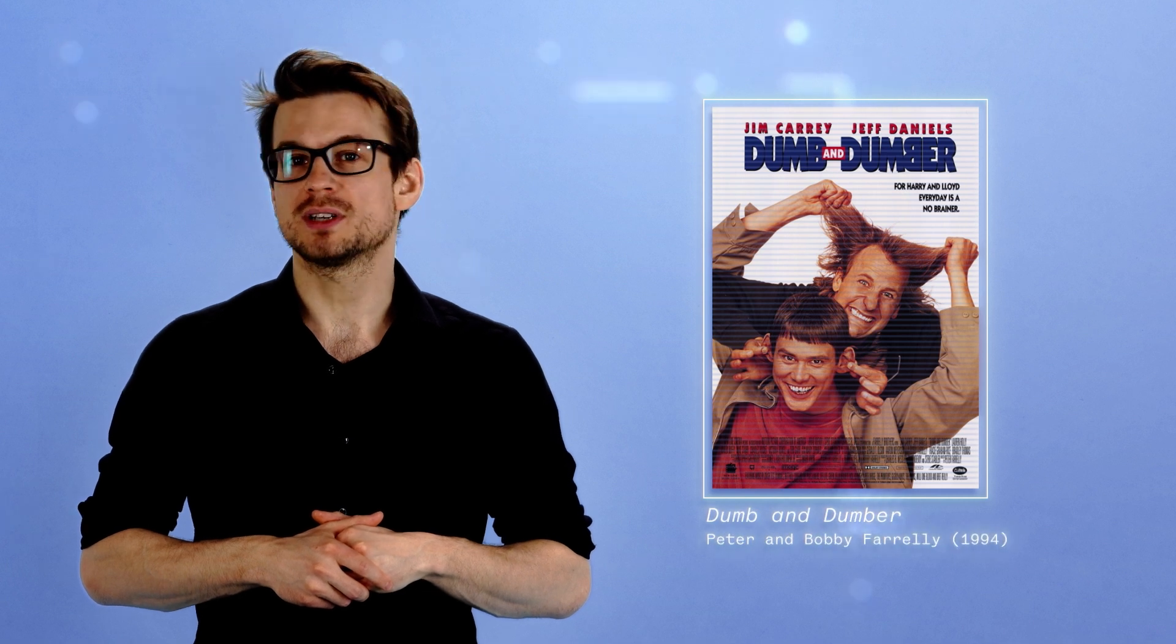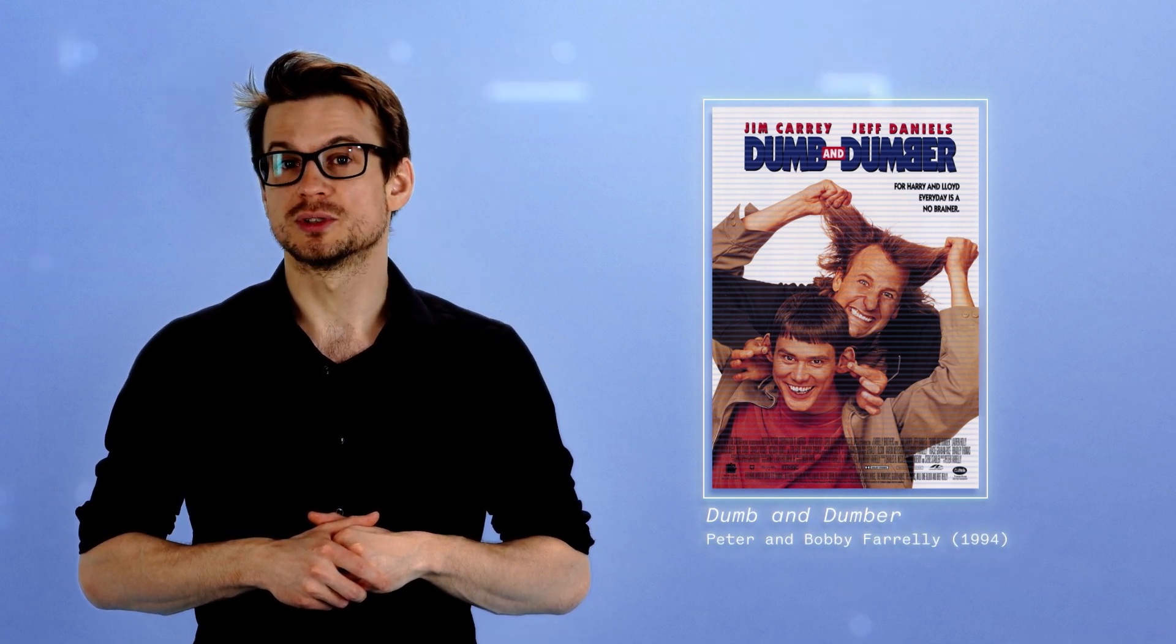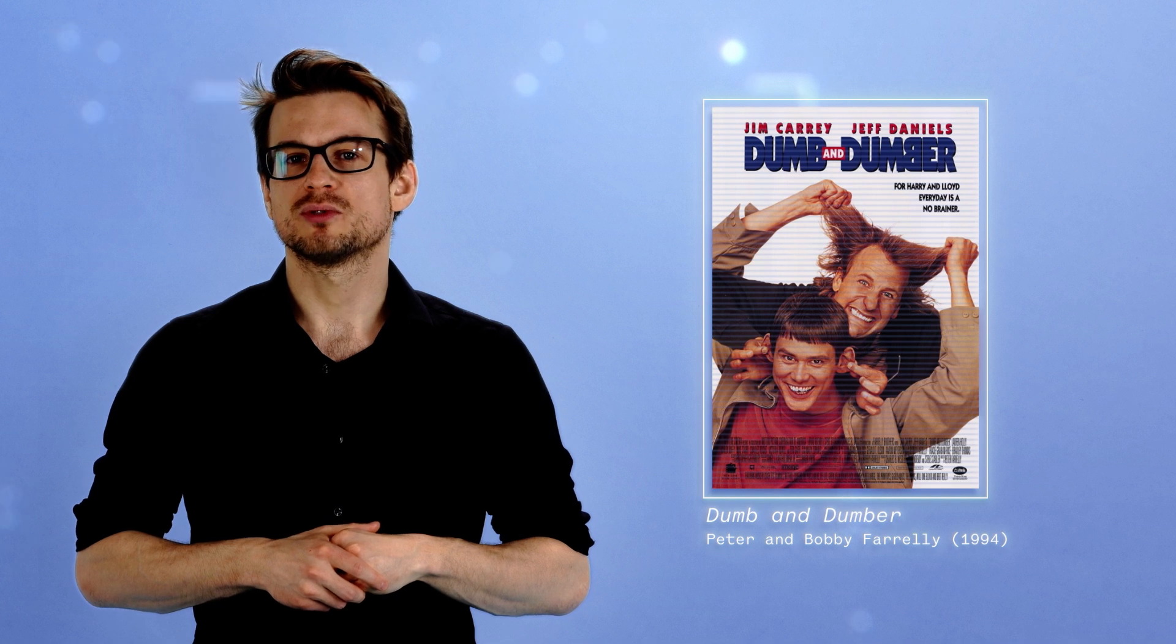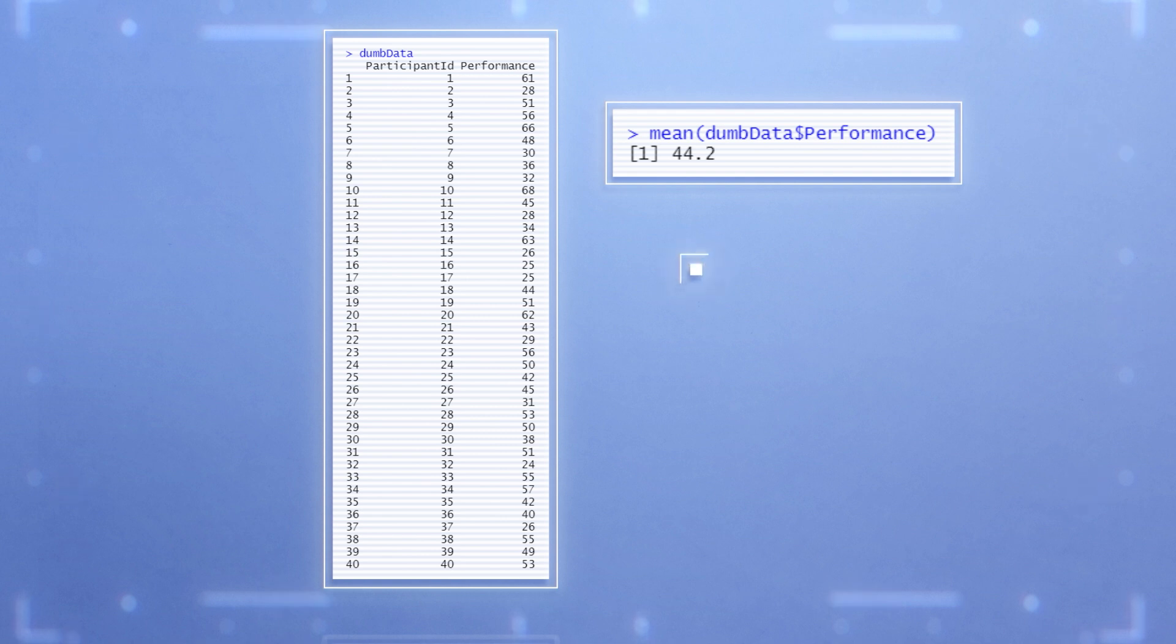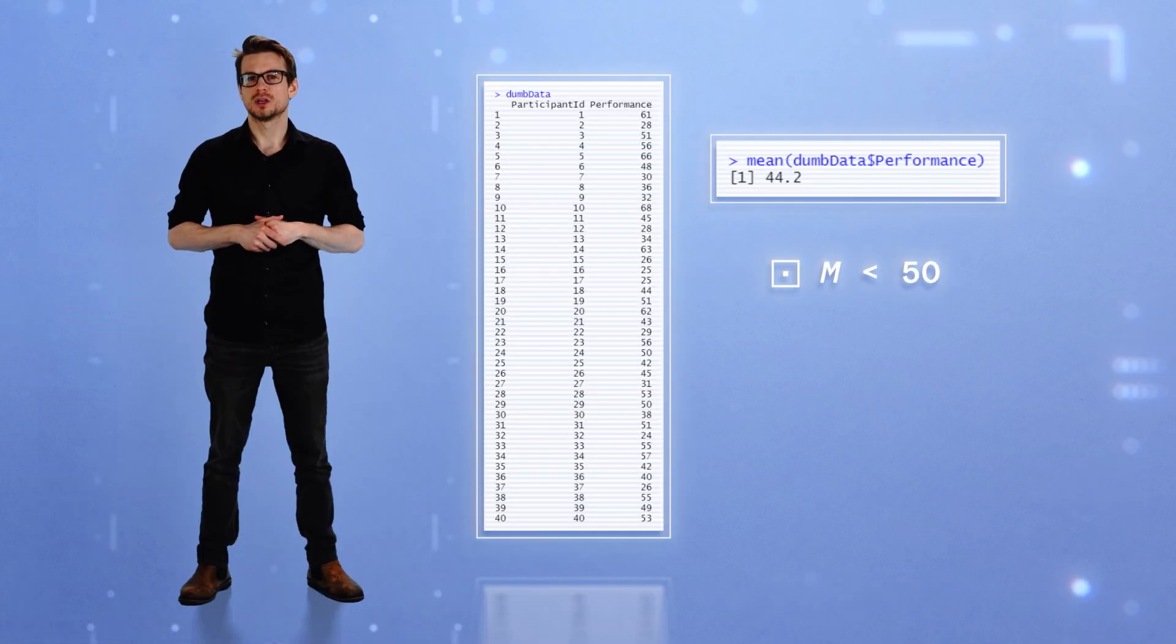Imagine running a study testing the hypothesis that watching dumb movies makes people dumber. Your prediction is that people who have just watched a dumb movie, say Dumb and Dumber with Jim Carrey and Jeff Daniels, will have their cognitive performances reduced. The average performance on a cognitive test in your study sample of 40 participants is 44.2. This score is below the average reference value of 50 taken from the ordinary population. You wish to test whether this negative difference generalizes beyond the study sample at the level of the population.